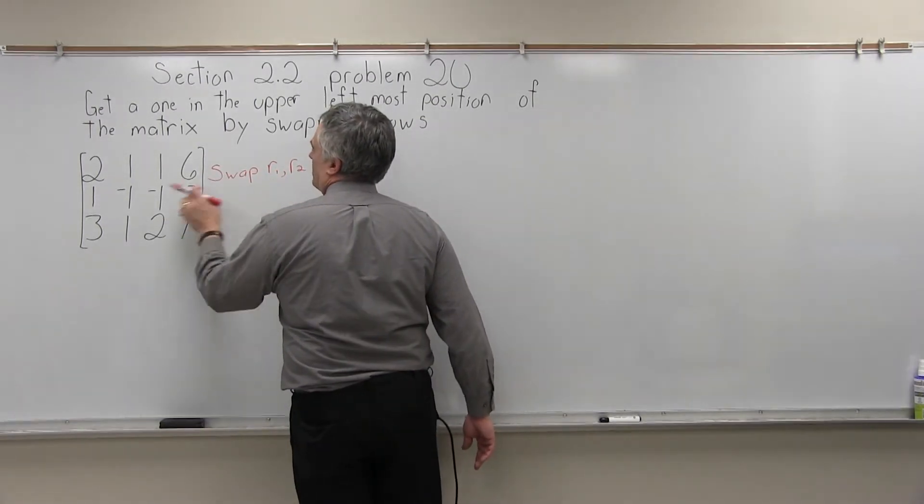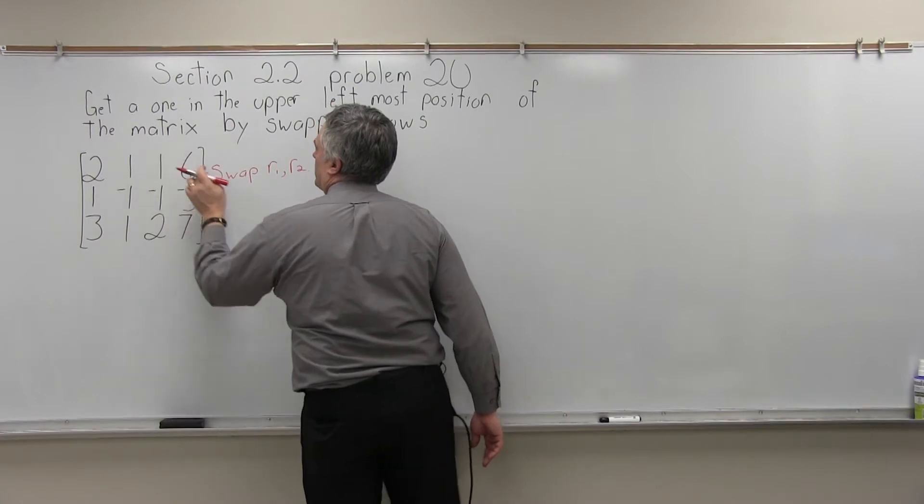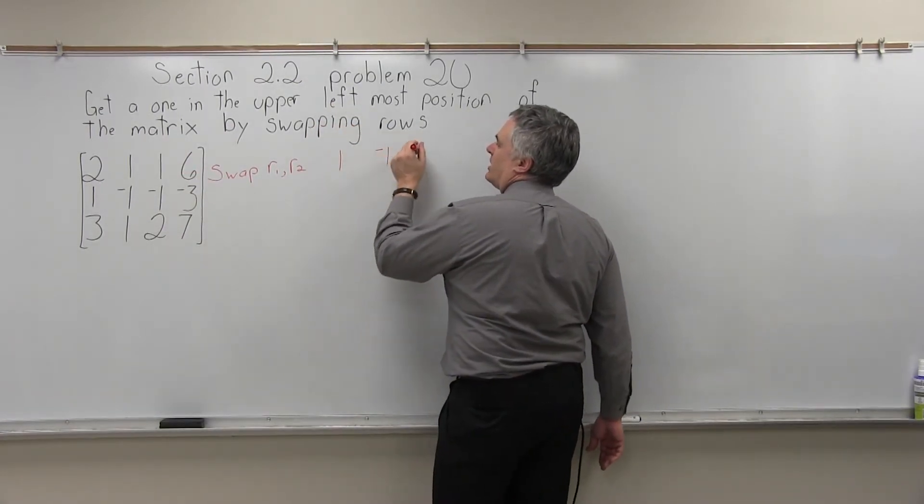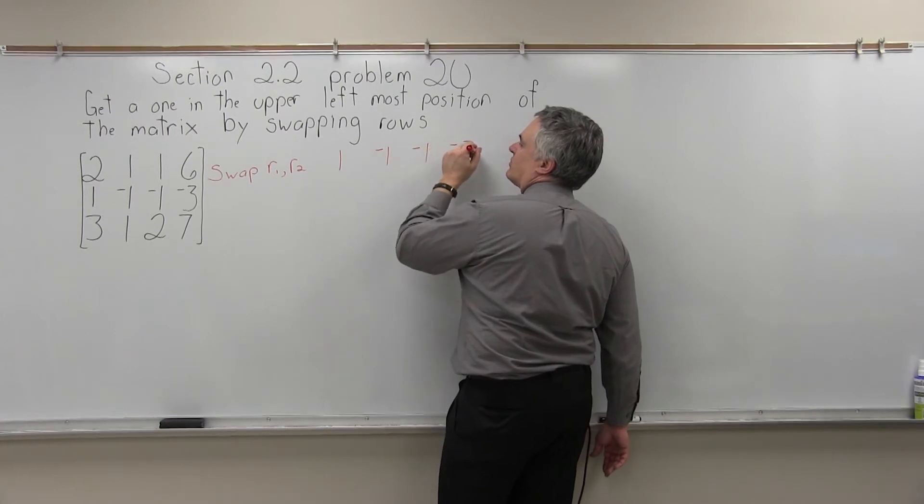So when I swap row 1 and row 2, what was row 2 is going to come up to the row 1 position, and that is 1, negative 1, negative 1, negative 3.